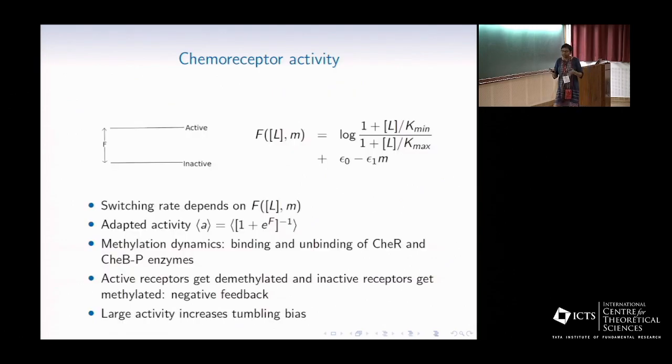Inside the cell, in the signaling pathway, the most important component is the chemoreceptors, which are transmembrane proteins. Half of them are sticking outside the cell, half are inside, and the part that is sticking out can bind to the attractant chemicals which are diffusing outside the cell. These proteins can be in two different conformations called active and inactive state.